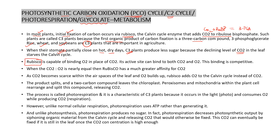Rubisco is an enzyme with an active site for both carbon dioxide and oxygen. Generally, when carbon dioxide and oxygen are equal, rubisco has more affinity for carbon dioxide. But when carbon dioxide becomes less — due to hot and dry climate — oxygen concentration increases and rubisco binds oxygen to RuBP instead of carbon dioxide. This 5-carbon compound then splits into a 2-carbon compound and a 3-carbon compound.